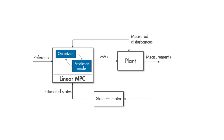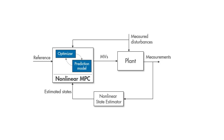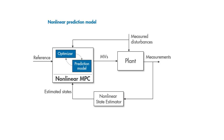As we discussed in the part 4 video, if we have a highly nonlinear plant that cannot be approximated by a linear model, or we have nonlinear constraints and a cost function, then a linear MPC controller won't be sufficient to control the plant. Instead, we can use a nonlinear MPC controller, which works similar to traditional MPC in that it uses a prediction model and solves an optimization problem to compute the control actions. The key difference is that nonlinear MPC lets us use a nonlinear prediction model and have nonlinear constraints and a non-quadratic cost function.